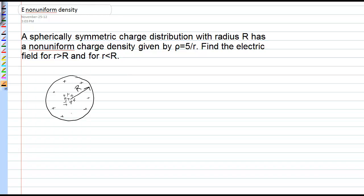So let's first find the electric field for r greater than R, so we're outside the charge distribution. We draw our Gaussian surface out where we want the electric field, and we'll let the distance from the center to our Gaussian surface be small r.